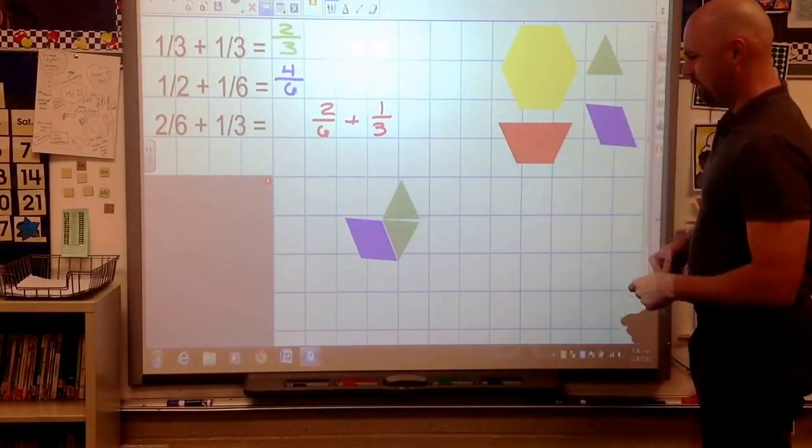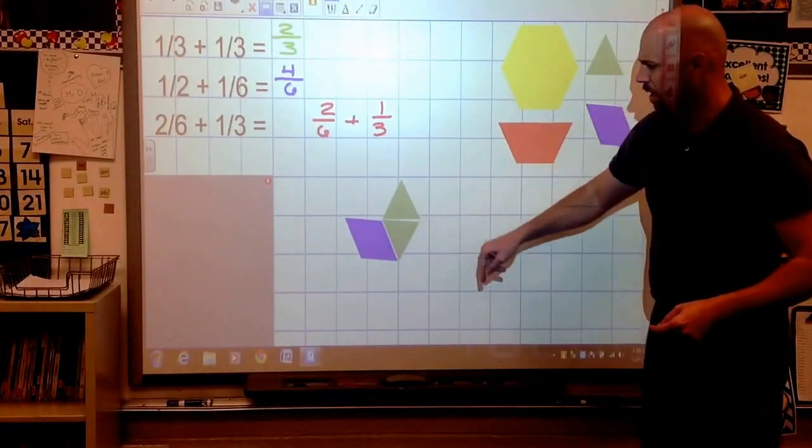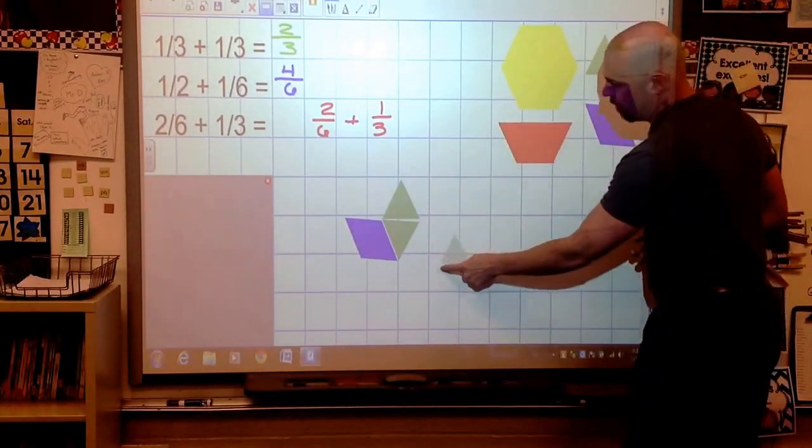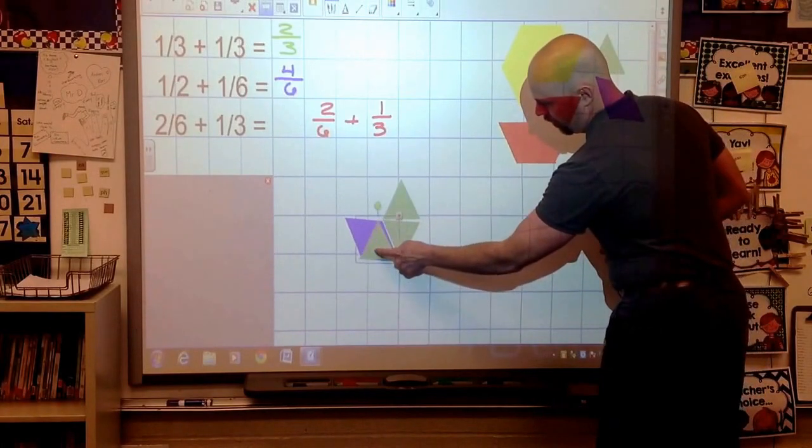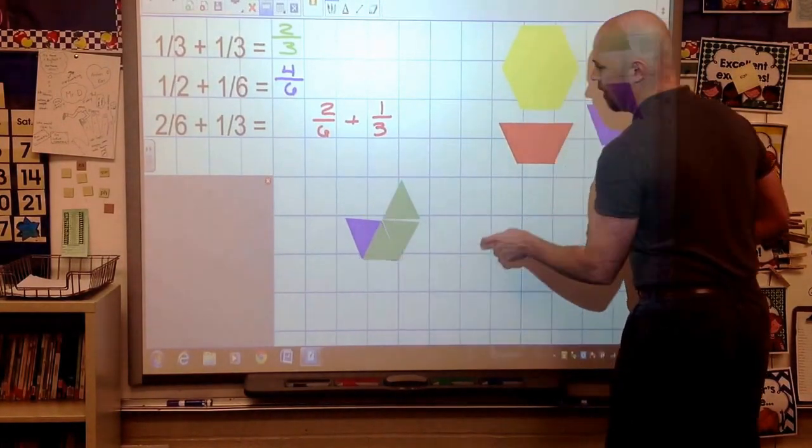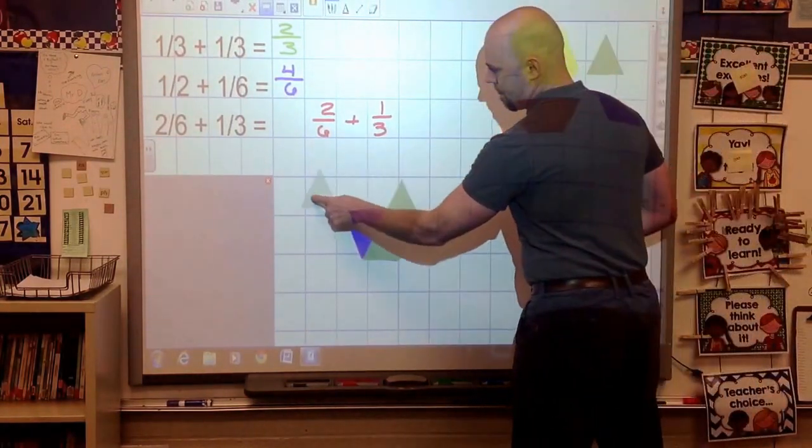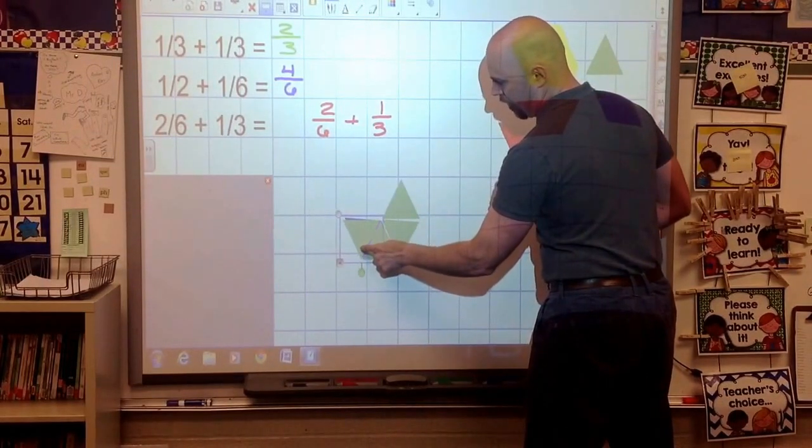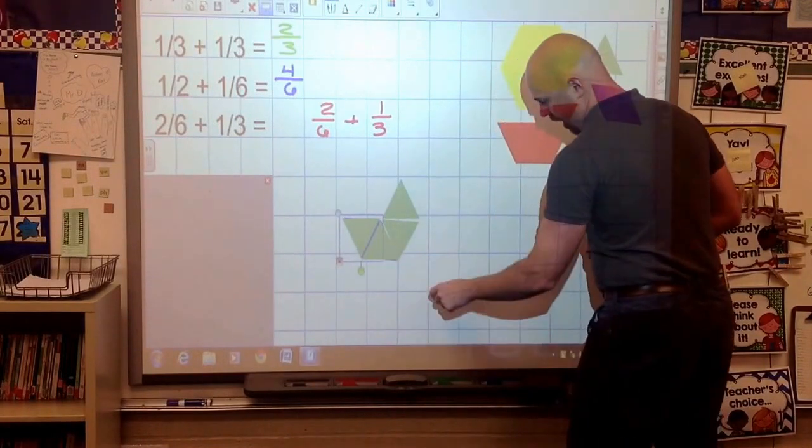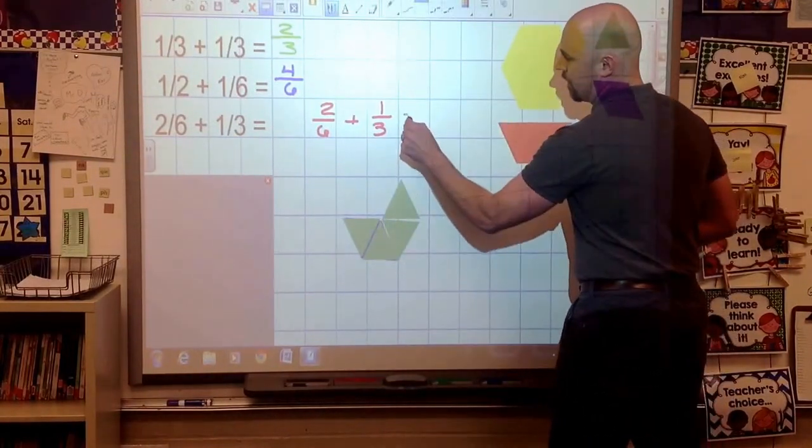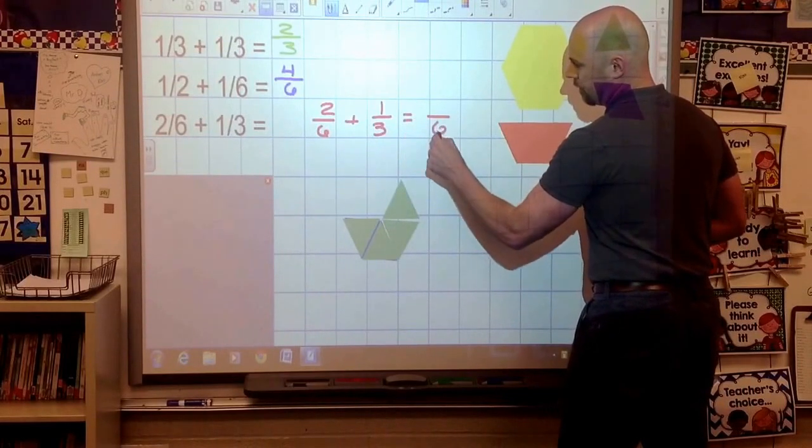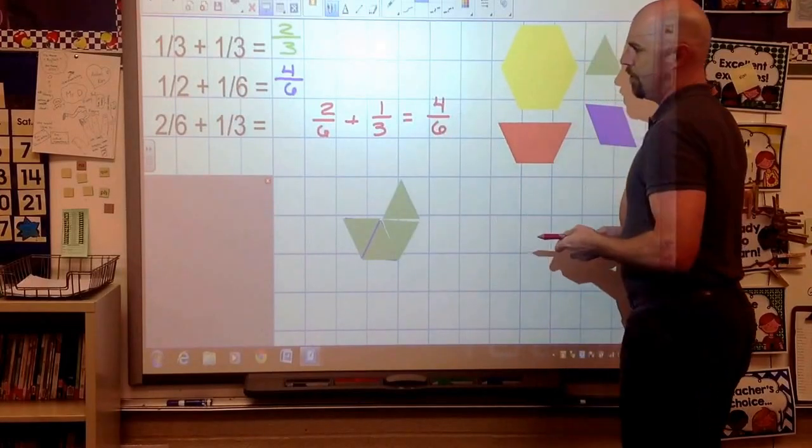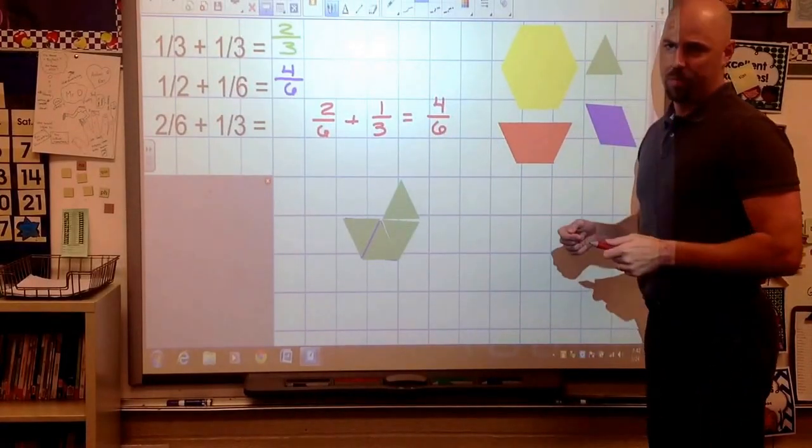Let's turn the whole thing into triangles. Let's get a common name for these things. Cover it all in triangles to get a common name so we can write down that denominator name. So now our name is going to be sixths because we're using triangles. And how many? One, two, three, four. 2/6 plus 1/3 equals 4/6.